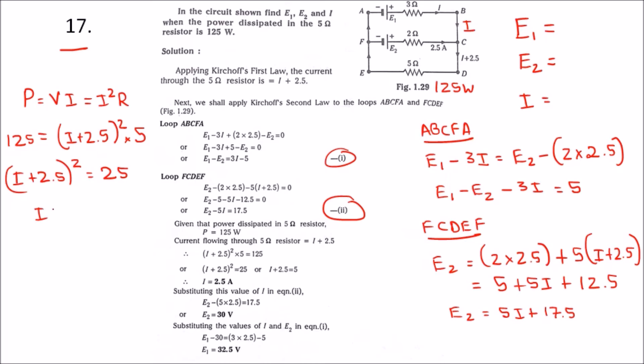I is equal to 5 minus 2.5, so I equals 2.5 amps.